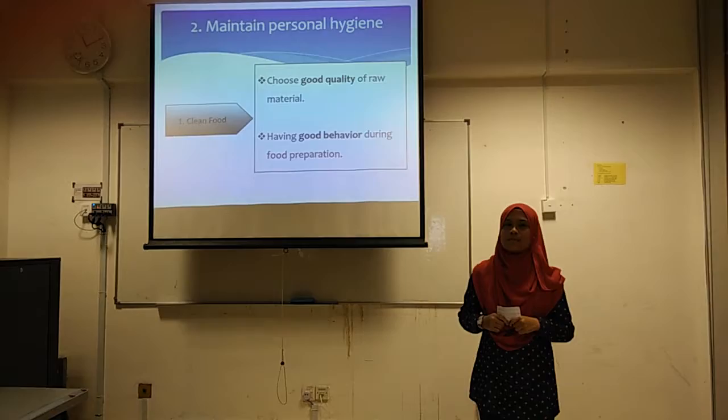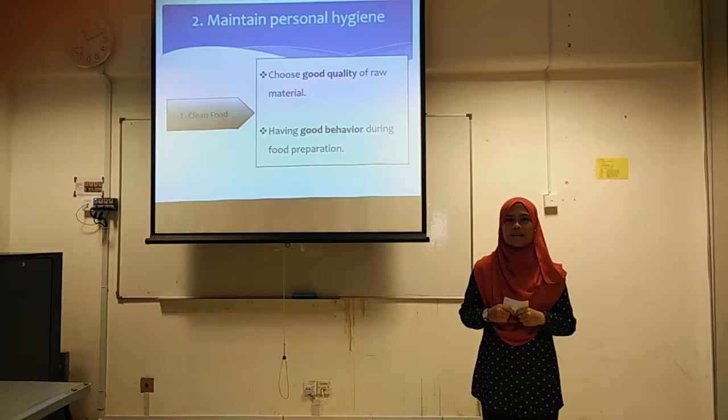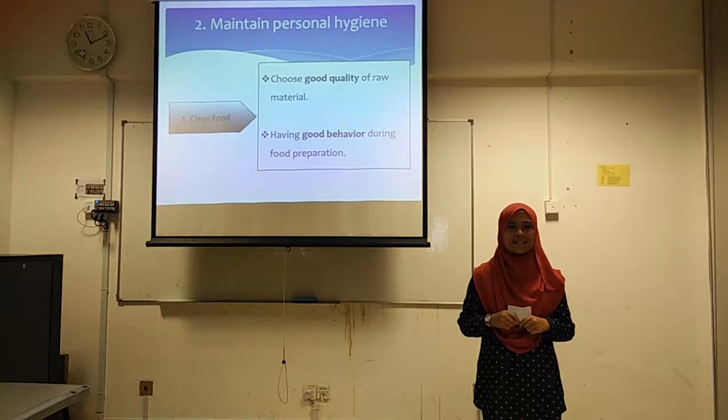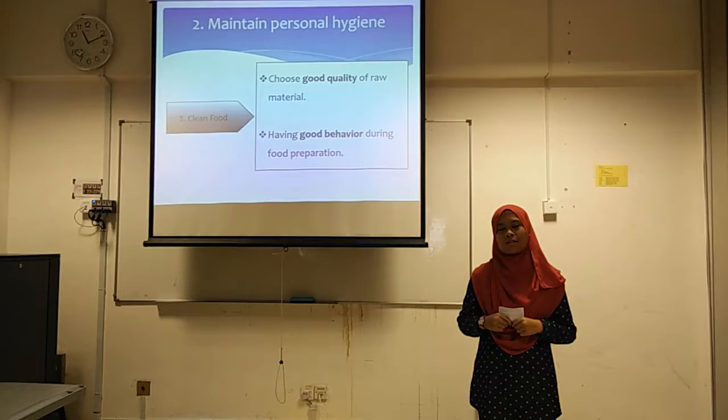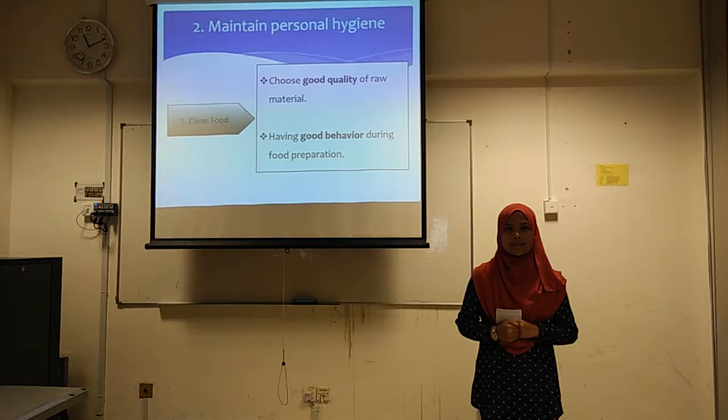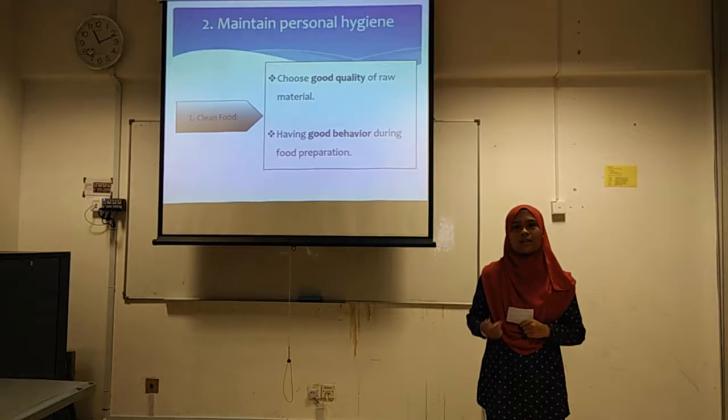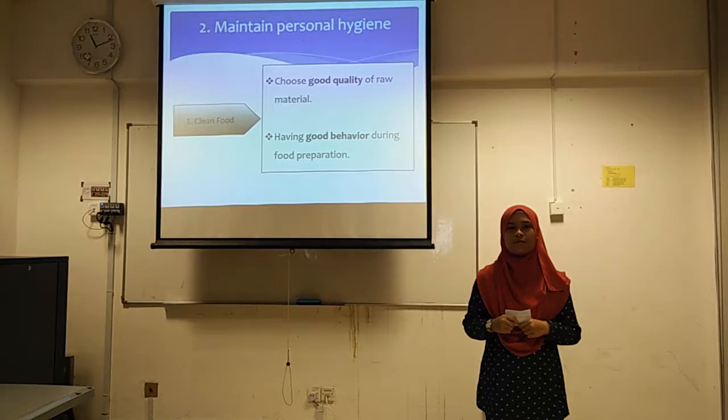In order to maintain our personal hygiene, there are two ways: through clean food and clean water. To make sure that the food we eat is clean, we should choose good quality raw materials. For example, when we go to the supermarket, we should only buy fresh raw materials such as fresh vegetables and fresh meat. We have to avoid buying rotten ones, because rotten vegetables or meat may contain many bacteria that can be harmful to our body system.